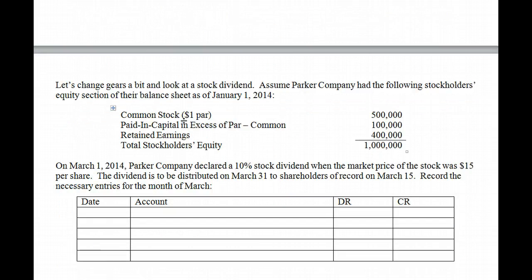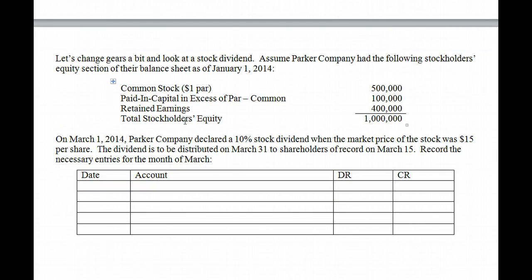Now let's look at stock dividends. Parker Company had the following stockholders' equity section on January 1st: Common Stock at $1 par — $500,000; Paid-in Capital — $100,000; Retained Earnings — $400,000; total stockholders' equity of $1 million.